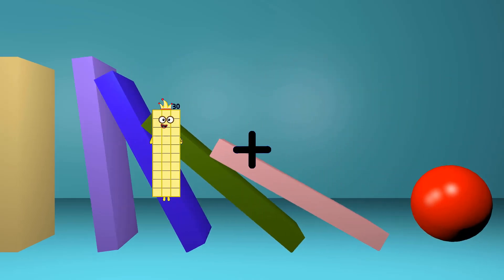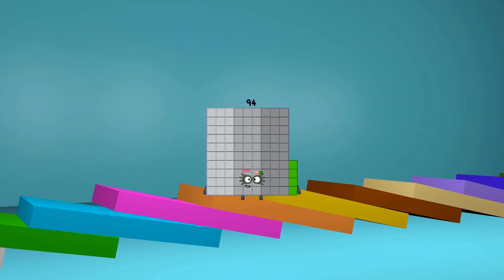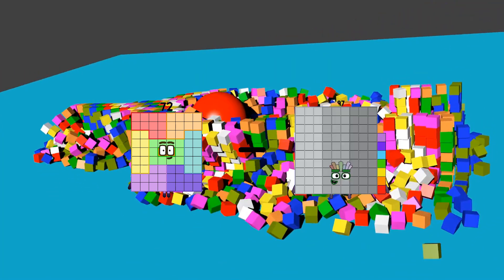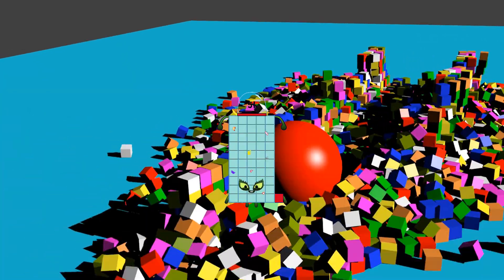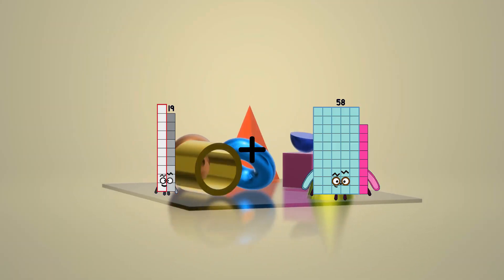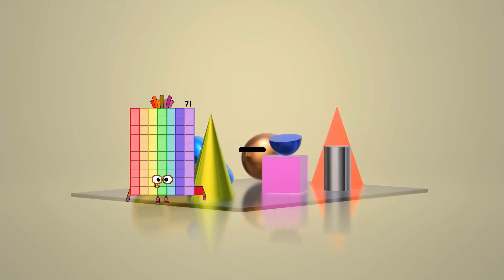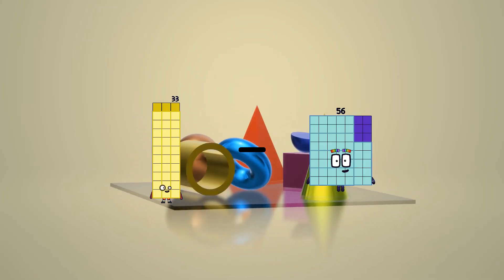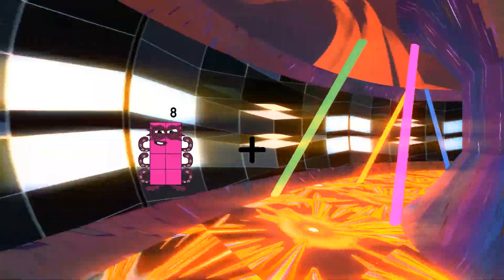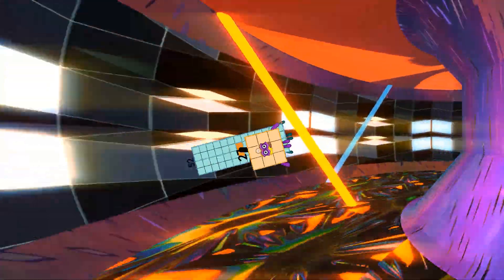30 plus 64 equals 94. 72 minus 21 equals 51. 19 plus 82 equals 101. 33 minus 24 equals 9. 52 plus 27 equals 79.